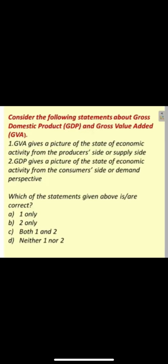Hello all, welcome to Study Buddy. In this video we will talk about the confusion in economics related to national income: GDP, GVA, Basic Price, Market Price, and Factor Cost.